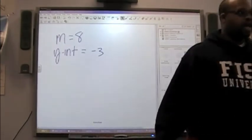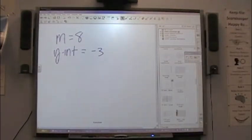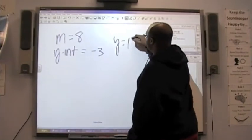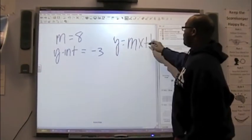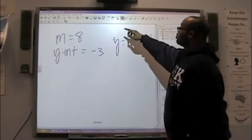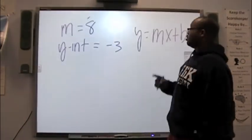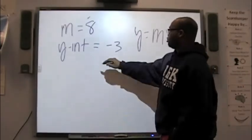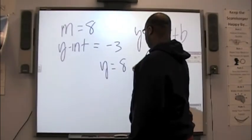If I have a slope of 8 and a y-intercept of what number? Negative 3. Negative 3. I can rewrite that out in slope-intercept form. First, let's write out the slope-intercept form. y equals mx plus b. b is your y-intercept and m is the slope. So, how would I rewrite that out now? Go ahead there, sir. y equals 8x plus negative 3.